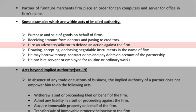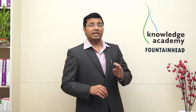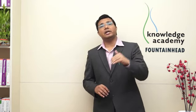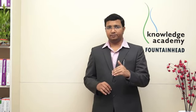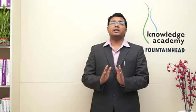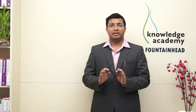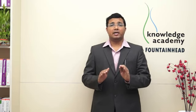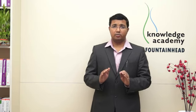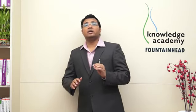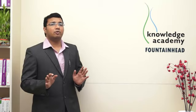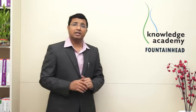Hiring an advocate or solicitor to defend an action against the firm is also within implied authority. For example, if there are three partners, two partners are outside India, and someone has filed a case against the firm, then the one partner who is in India can hire an advocate to defend that case — it is allowed. No separate permission is needed; it is implied authority.